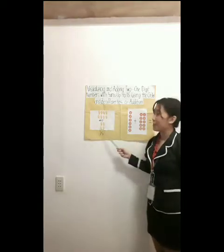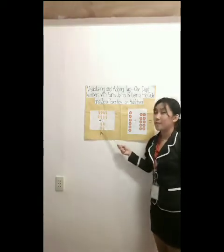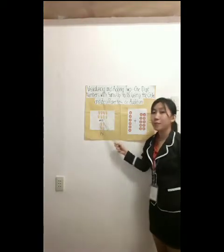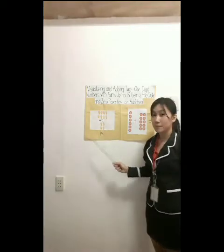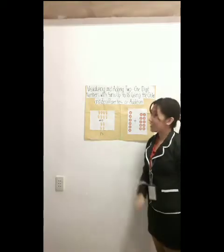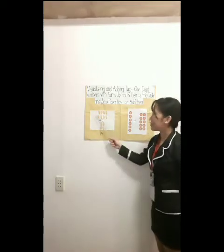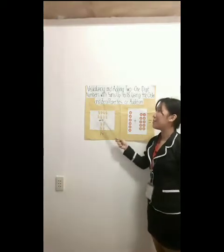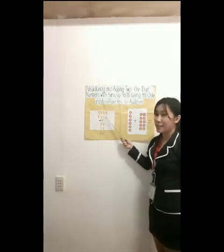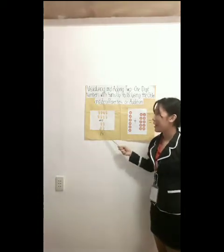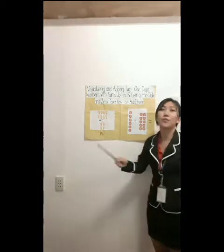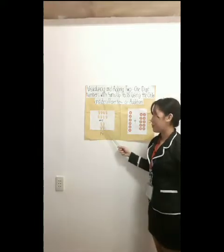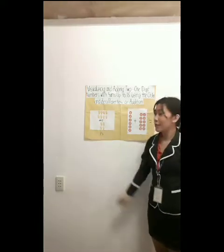How about this one? 1, 2, 3, 4. So 8 plus 4 equals how many? Let's count how many mangoes: 1, 2, 3, 4, 5, 6, 7, 8, 9, 10, 11, 12. There are 12 mangoes found in the picture. So there are 12 mangoes. Let's move on to another example.